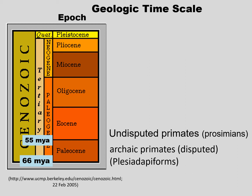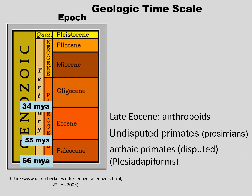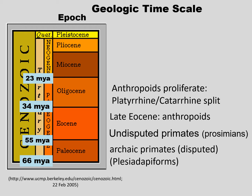But by the Eocene epoch, we have undisputed primates. Initially prosimians, but we also, fairly early on, see anthropoids. The Eocene is the age of the prosimians, but by the late Eocene, anthropoids are becoming more common and prosimians less.